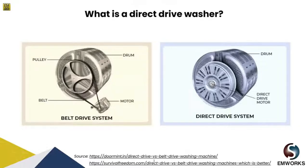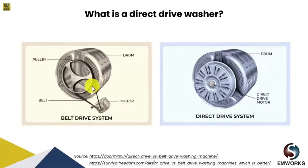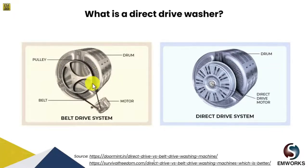Here you can see two different arrangements of a washing machine system. Since our presentation is about the direct drive washer, let us first understand what the belt drive system is. In a belt drive washer, a motor turns the washer tub via a belt drive — a mechanical system that uses a pair of pulleys connected to the central shaft with a flexible belt.